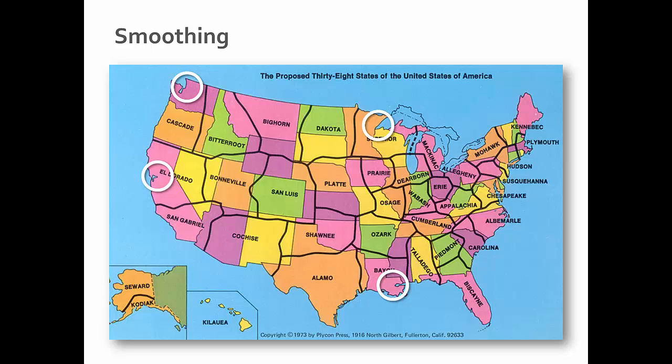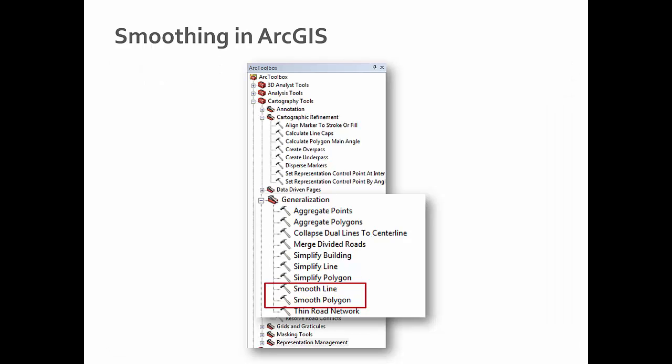Smoothing is used all the time. We often use simplification to eliminate nodes first, but then if you want to make a map look more organic, or appropriate at the right scale, or just friendlier, we can use smoothing. For example, on a map you can use smoothing to add curvature and make the border of the U.S. look less sharp and jagged. Borders are actually very jagged, often following rules like latitude and longitude. Smoothing can be found in the ArcGIS ArcMap Toolbox under Generalization — smooth line, smooth polygon.